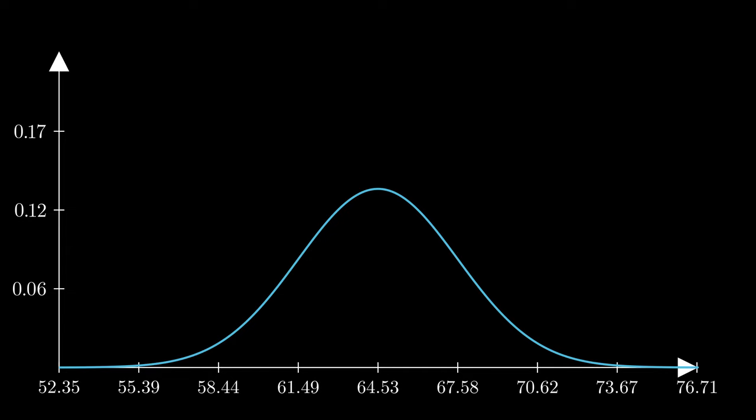Mu, the mean, is going to be a parameter that reflects the center of the bell curve and its peak. In this case, it is 64.53.